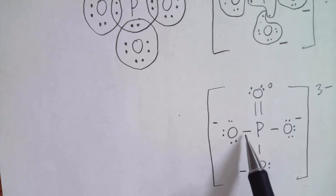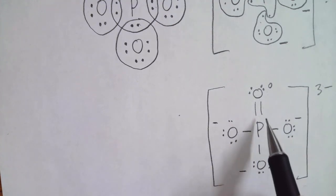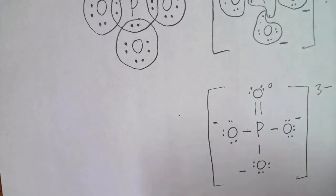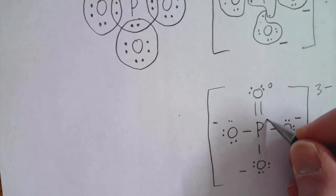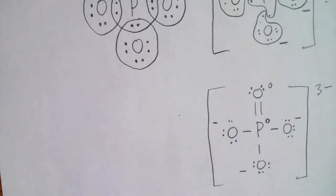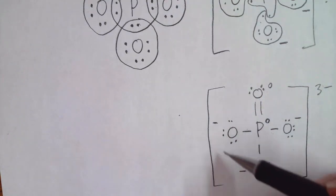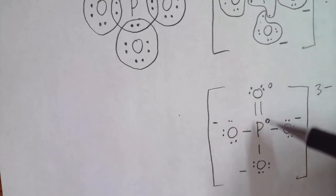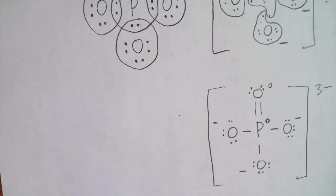The phosphorus in the middle, each single bond gives it ownership of a single electron. The double bond gives it ownership of two electrons, so we have 2, 3, 4, 5 electrons available. Phosphorus, neutral phosphorus has five valence electrons. So in this state, it has a formal charge of zero. We still end up with a negative three charge, but two of the atoms having a formal charge of zero is considered favorable in the Lewis structure.